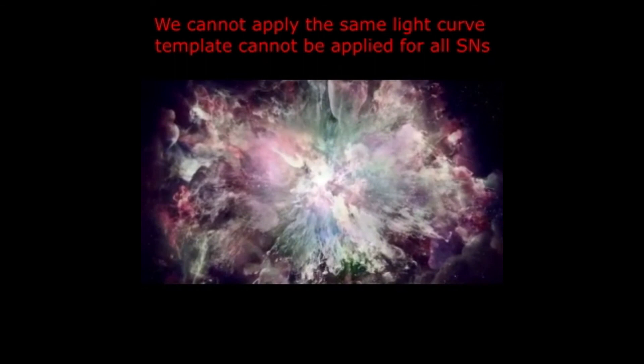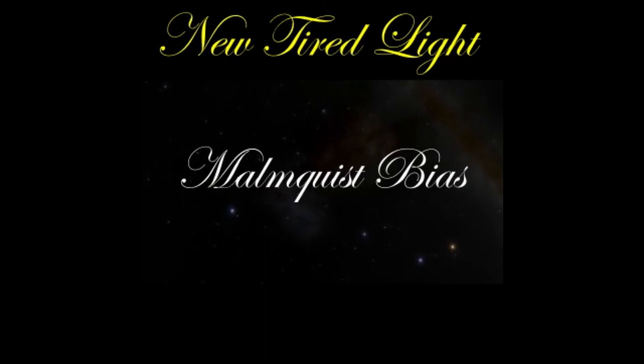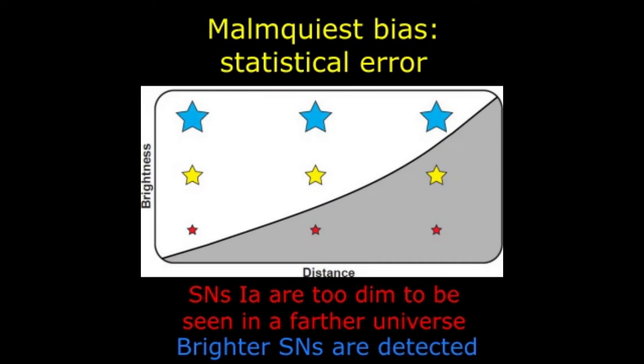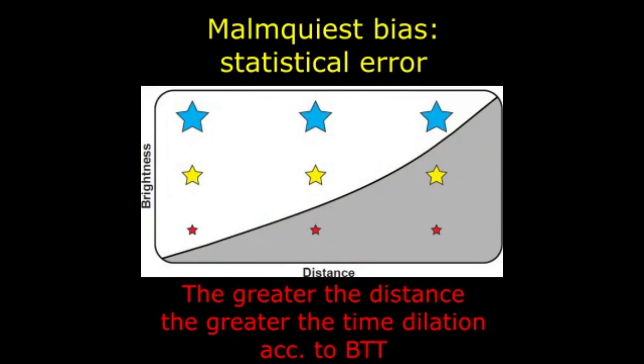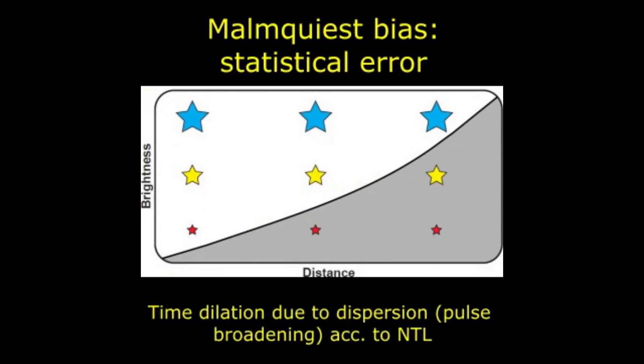The Malmquist bias is a statistical error related to the samples of supernovae chosen for measuring the time dilation. As Type Ia supernovae are the standard candles deemed observable in the distant universe, scientists started to look for brighter supernovae, which consequently take more time to rise and decay — in order to demonstrate that the greater the distance, the greater the time dilation due to the expansion of space. With the New Tired Light theory, there is no time dilation due to the expansion of space, only dispersion due to pulse broadening. The greater the distance, the greater the dispersion due to photon-electron collisions in the intergalactic medium.